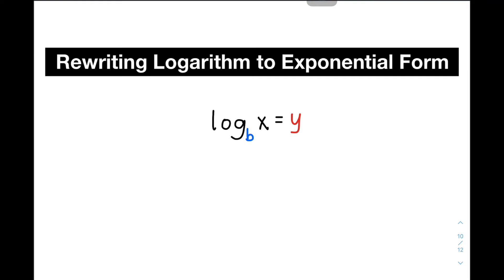Again, let me repeat the process. b raised to y is equal to x. So the equivalent exponential form of the logarithm of x to the base of b is equal to y is none other than b raised to y is equal to x.